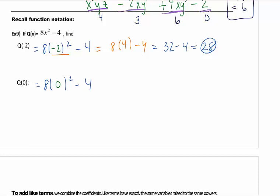28 is my answer. That is my Y value. Looking at my second one here, I get 8 times 0 squared, which is 8 times 0. 0 times anything is 0, so I get a negative 4. Not a new idea, but it's going to be on this test as well. Function notation is really important.